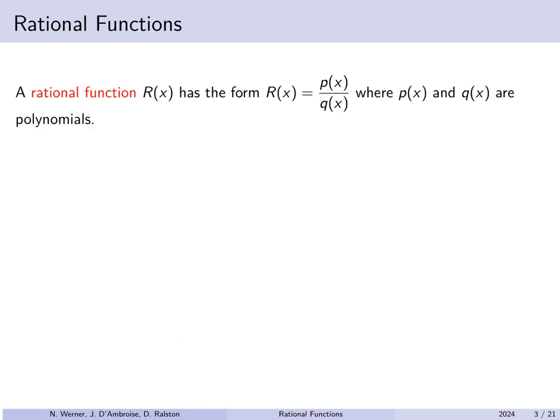A rational function R has the form R of x equals P of x over Q of x, where P of x and Q of x are polynomials. In other words, a rational function is a ratio of two polynomials.